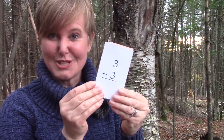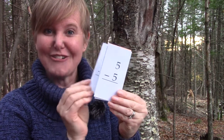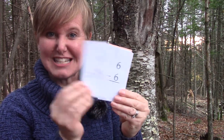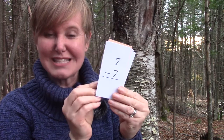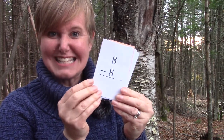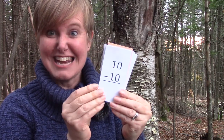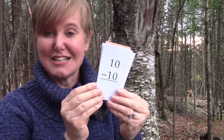Three minus three is zero. Four minus four is zero. Five minus five is zero. Six minus six is zero. Seven minus seven is zero. Eight minus eight is zero. Nine minus nine is zero. And ten minus ten is zero. These are going to be easy — this answer is the same every single time. It's zero, or nothing, because we took everything away.